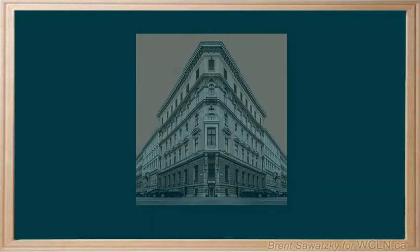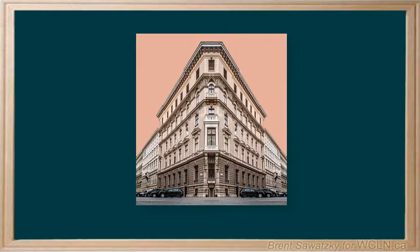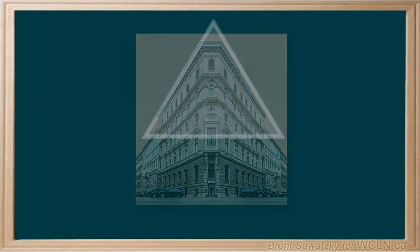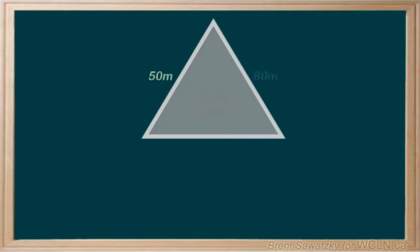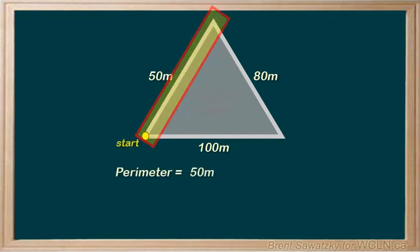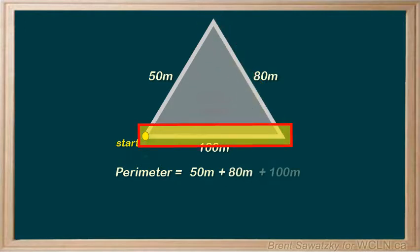What if you were right downtown, and your running path was a triangle, with sides 50 meters, 80 meters, and 100 meters? If you ran this path, you could say I ran 50 meters, then 80 meters...